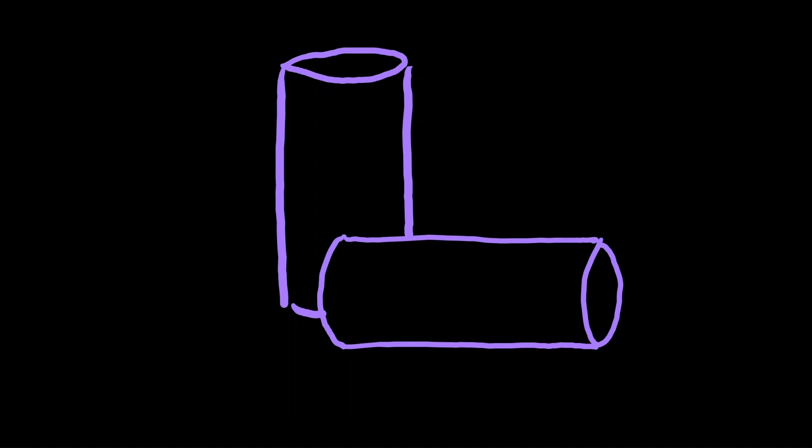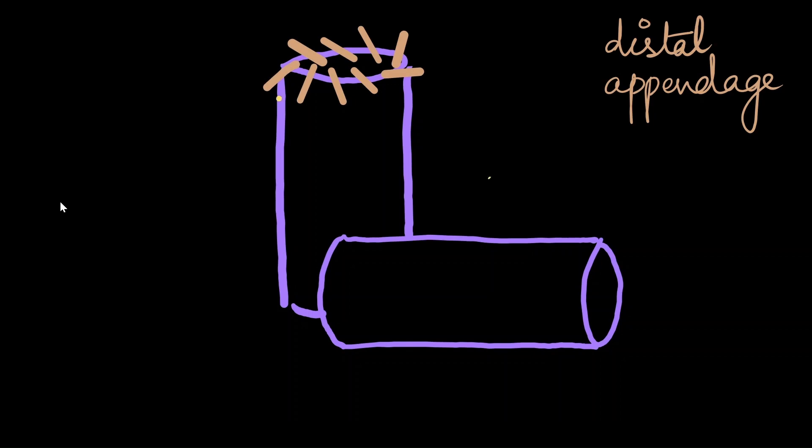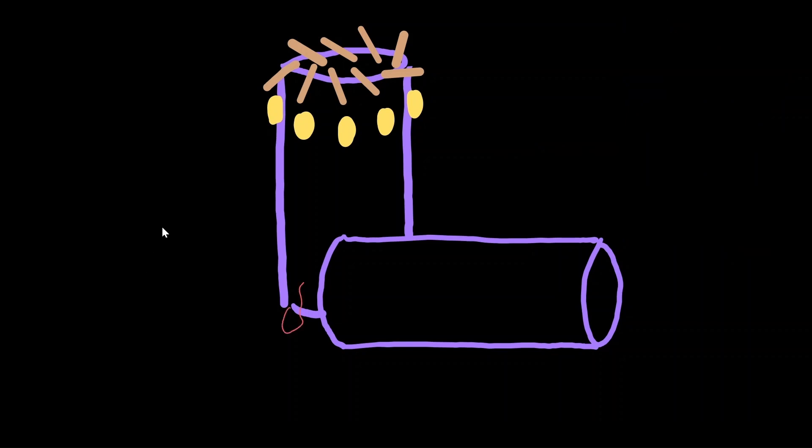How do we differentiate the mother centriole from the daughter centriole? Mother centrioles are decorated with distal appendages as well as subdistal appendages. These are structures which help the centrosome anchor themselves within the cell during cell division. Anchoring gives more stability to the overall structure. The mother and daughter centrioles are connected by interconnecting fibers.